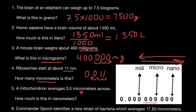A mitochondrion averages 0.5 micrometers across. How much is this in nanometers? We have micrometers to convert to nanometers. Nano is 1,000 times smaller than micro, so we move the decimal point three places to the right. Starting from 0.5, we move one, two, three places, add zeros, and we get 500. So 0.5 micrometers equals 500 nanometers.